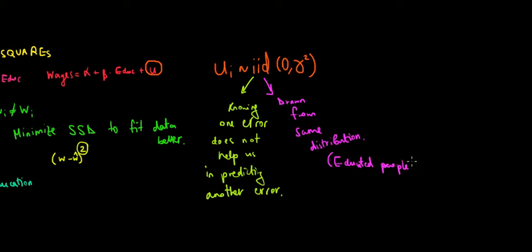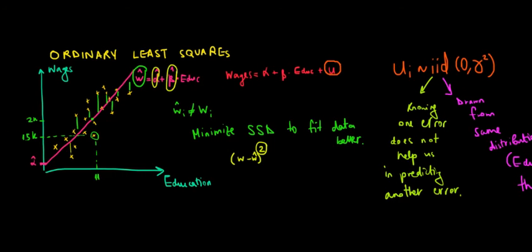Now comes the most important part: the mean of the error term, the expected value of the error, must be zero, and the variance must be constant. The expected value of this unexplained term must be zero. What does that mean? That means that on average, if we take infinitely many observations of people who educated themselves and are working at the moment, and we regress the data, we will not have errors. We will predict accurately if we take really many observations. In other words, if we look on our graph, we can actually argue this.